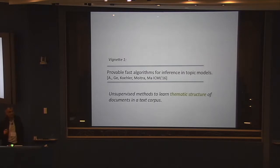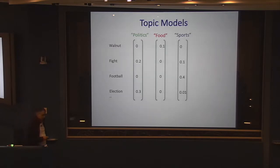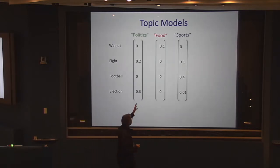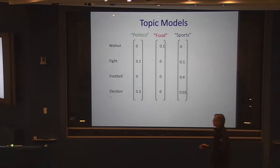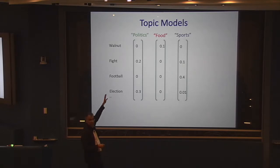Topic models are unsupervised methods — they work without any human supervision or labeling — to learn the thematic structure of documents in a text corpus. The idea is that you're trying to understand some text corpus — completely unlabeled — like New York Times articles or journal articles. You hypothesize that there are some topics, like politics, food, sports, et cetera, which the algorithm discovers. This field uses a bag-of-words view of documents: you ignore all linguistic structure and think of how many times each word occurs.